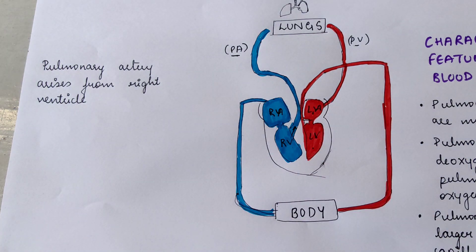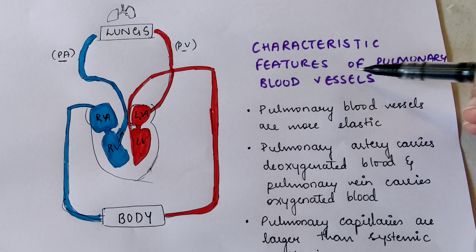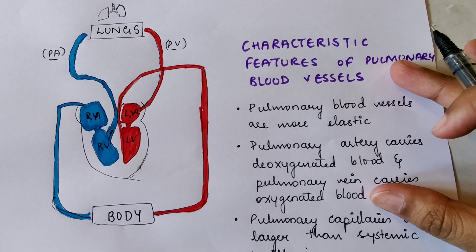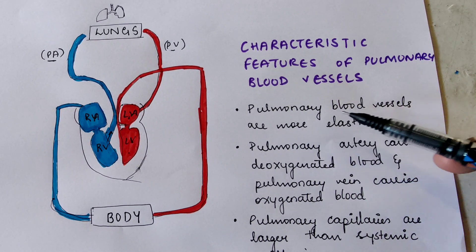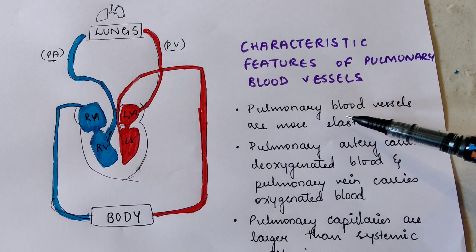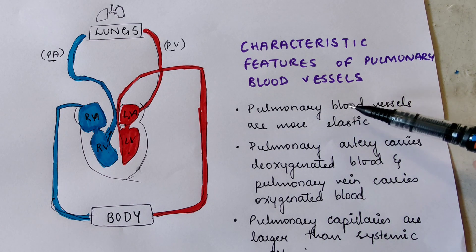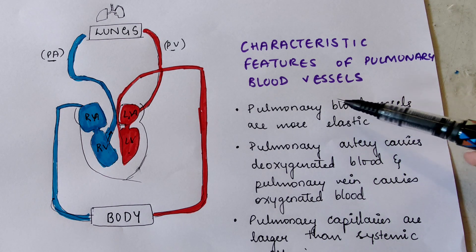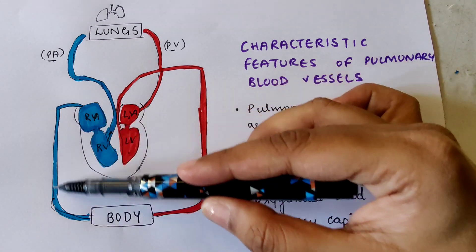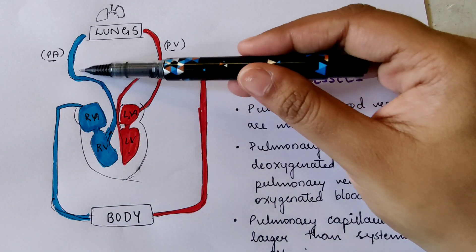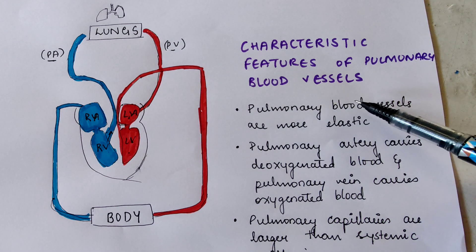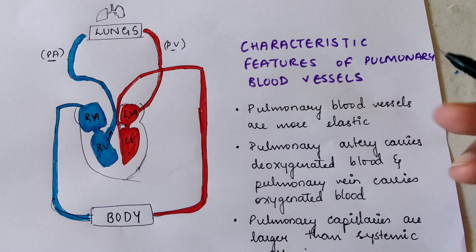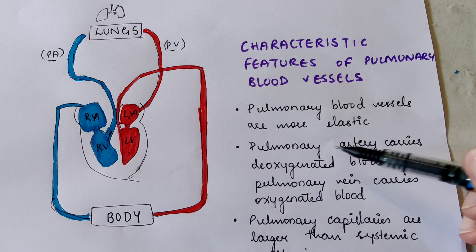Let's understand a few characteristic features of pulmonary blood vessels. Pulmonary blood vessels are more elastic — this means comparatively to our systemic vessels. Systemic means vessels in our body; pulmonary means vessels in our lungs. So pulmonary blood vessels are more elastic compared to systemic vessels.